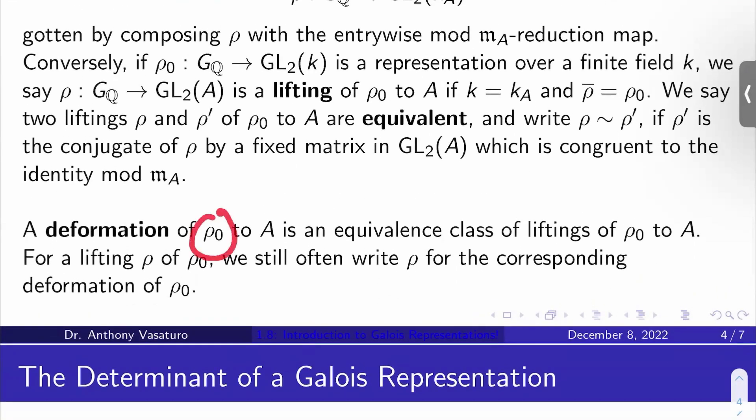And so then a deformation of rho_0 to A will be just an equivalence class of liftings under this equivalence of rho_0 to A. And for a lifting rho of rho_0, we'll still often write rho for the corresponding deformation of rho_0 just kind of by abusive language.